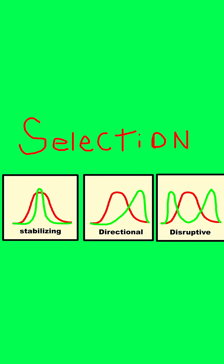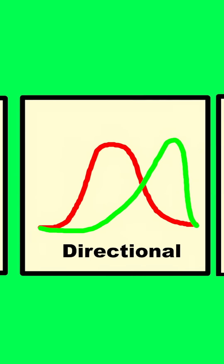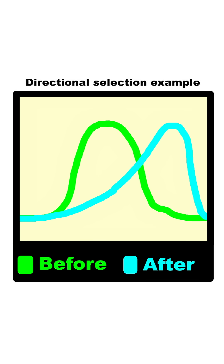The second type of selection is directional selection. This is where one extreme works well and one extreme does badly, and this would result in the trait moving towards one extreme and away from the other.